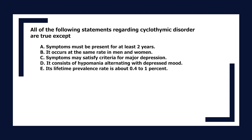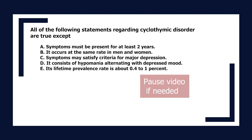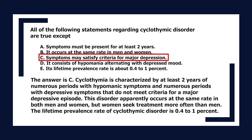All statements regarding cyclothymic disorder are true except: A. Symptoms must be present for at least two years. B. It occurs at the same rate in men and women. C. Symptoms may satisfy criteria for major depression. D. It consists of hypomania alternating with depressed mood. E. Its lifetime prevalence rate is about 0.4 to 1%. The answer is C. Cyclothymia requires at least two years of hypomanic and depressive symptoms not meeting criteria for major depressive episode. Lifetime prevalence is 0.4–1%; women seek treatment more often than men.